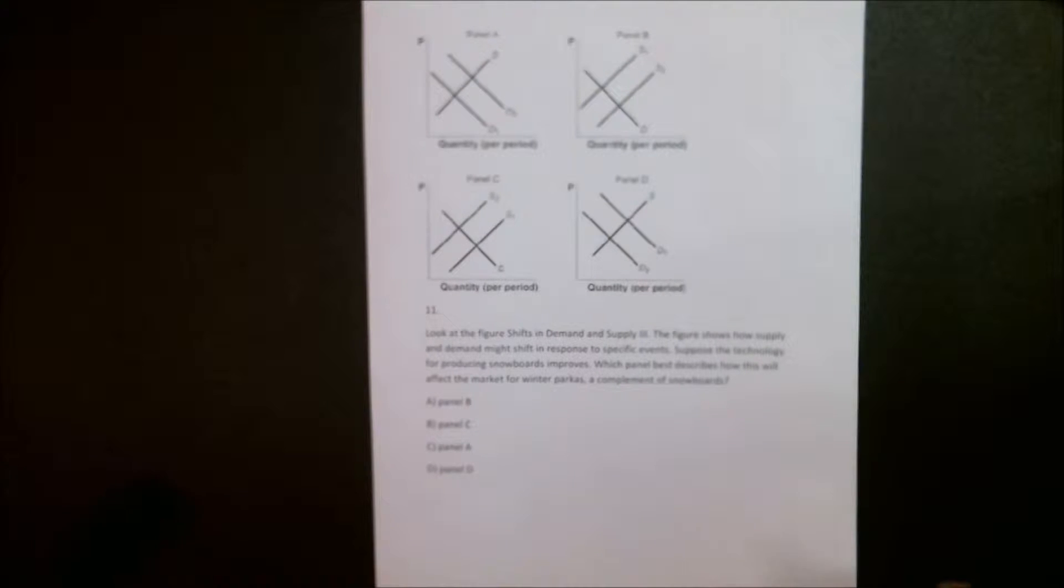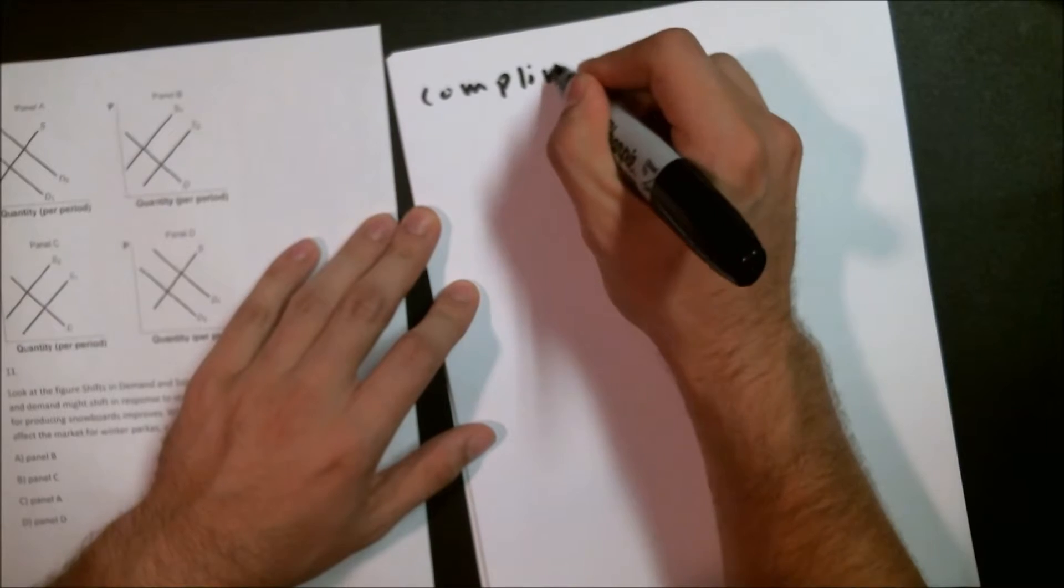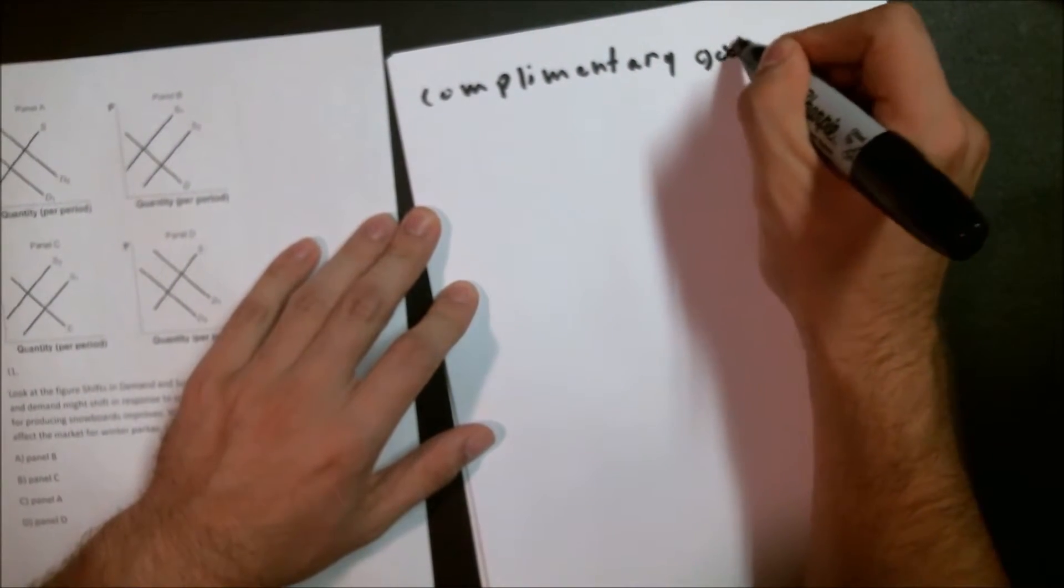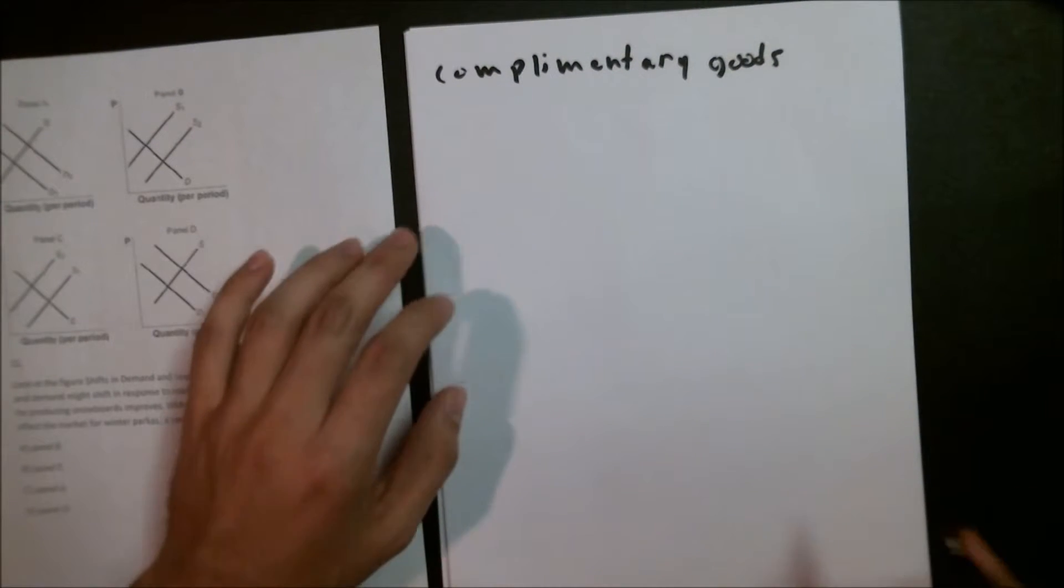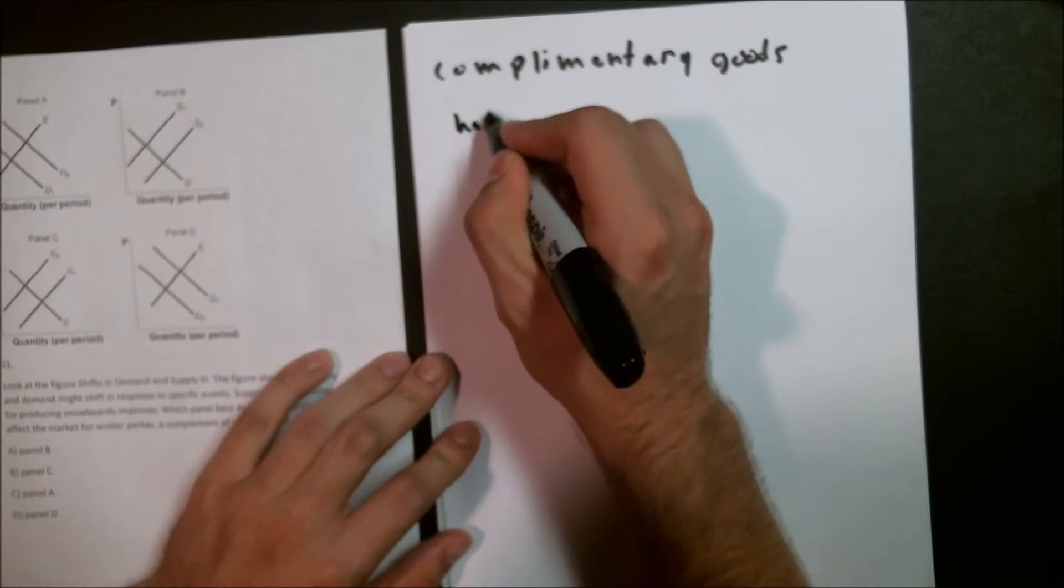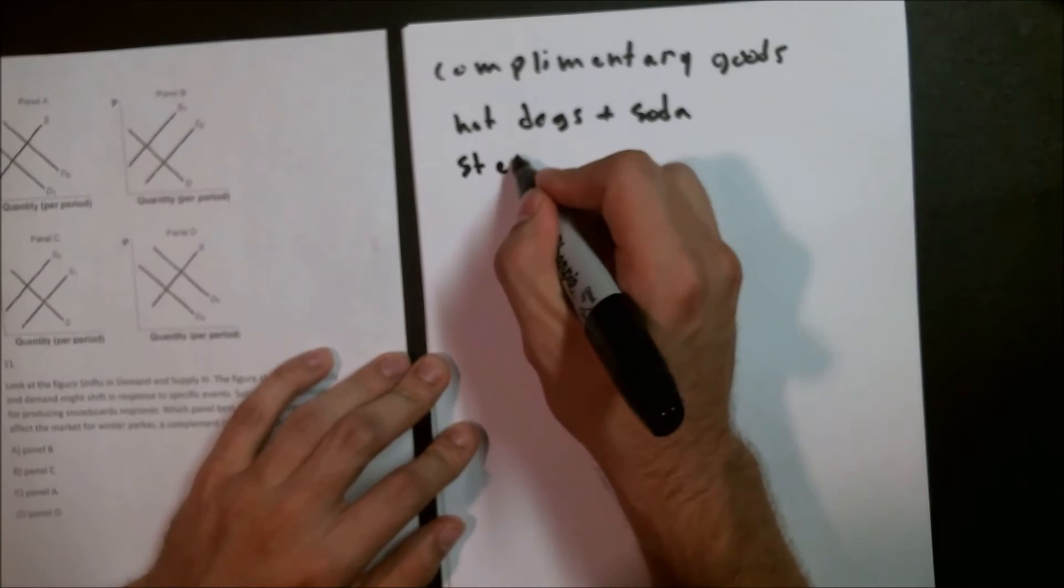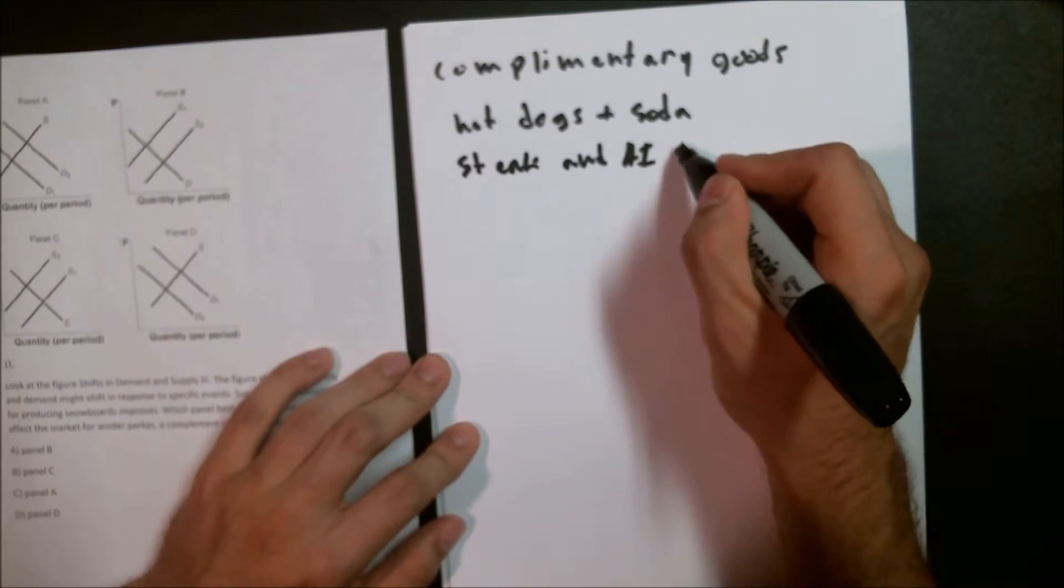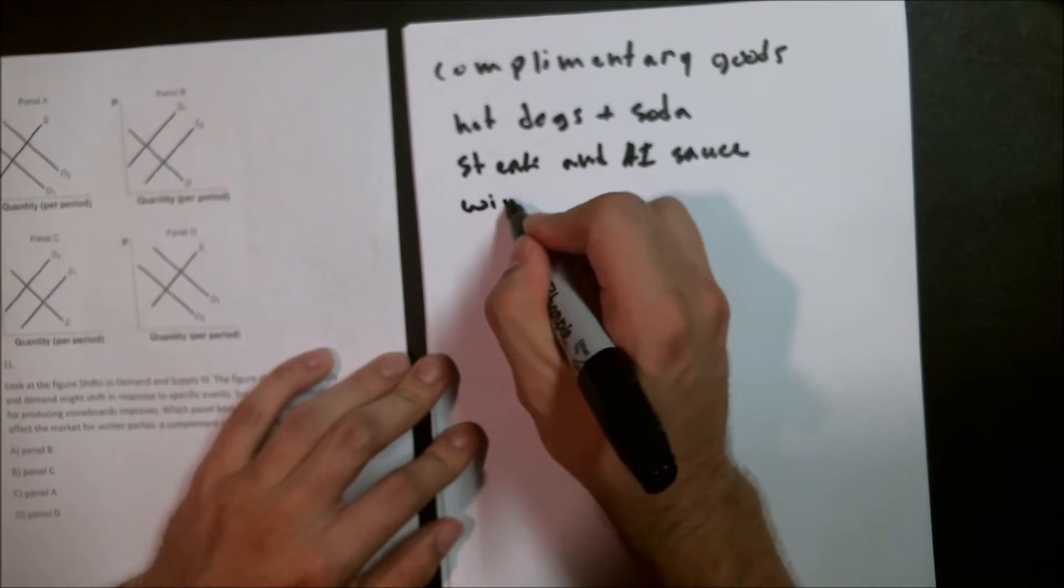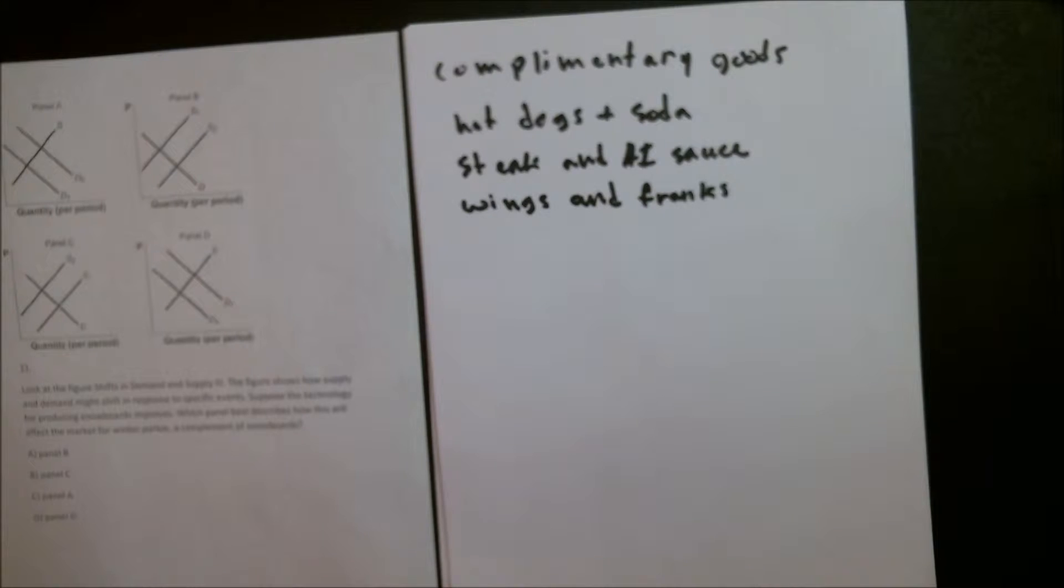The first thing to remember on this question is what a complementary good is and what a substitute good is. How are they different and what do they do? A complementary good is something that goes well with another good. Anything that would cause an increase in demand for that good would also cause an increase in demand for the other good because they go together. Examples of this would be hot dogs and soda, steak and A1 sauce, and maybe wings and franks.